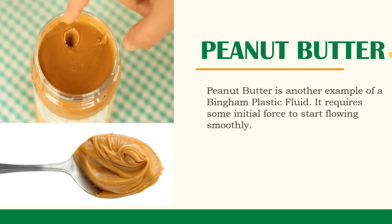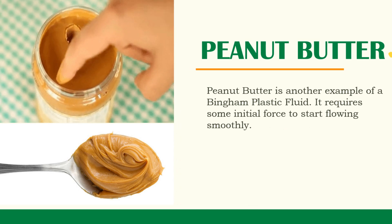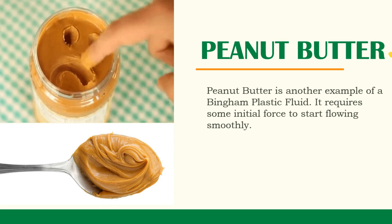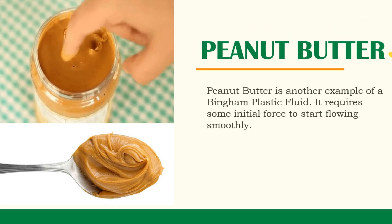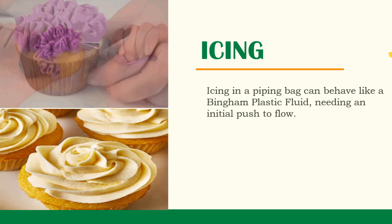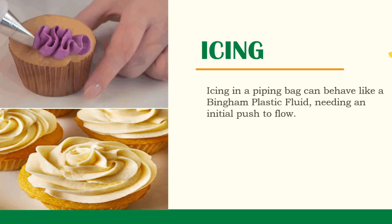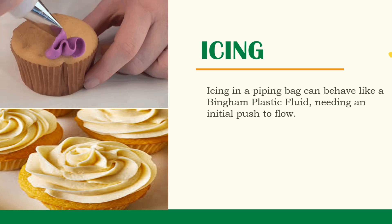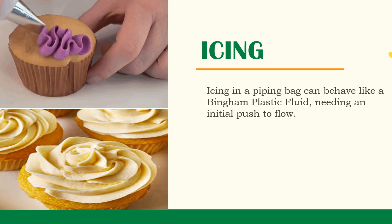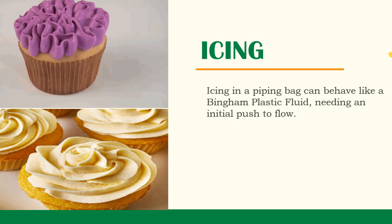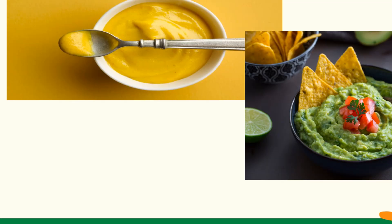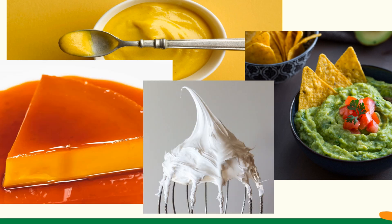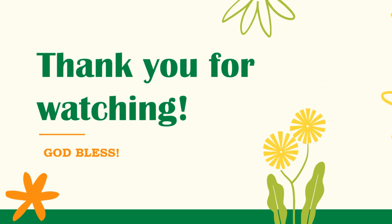Peanut butter is another example of a Bingham plastic fluid — it requires some initial force to start flowing smoothly. Icing used in baking can also resemble Bingham plastics, as they require spreading or piping after reaching the right consistency. Other examples of Bingham plastic fluids include mustard, custard, guacamole, beaten egg whites, and so many more.